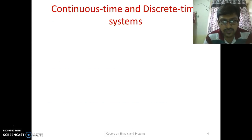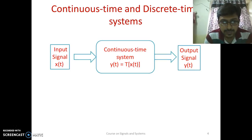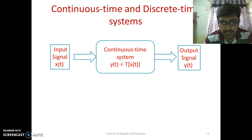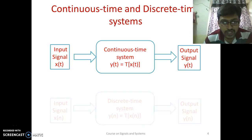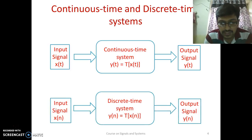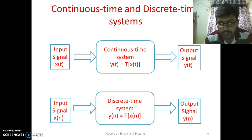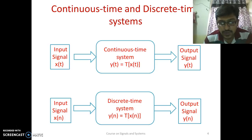We will start with continuous time and discrete time systems. A system is called a continuous time system if it has input as a continuous time signal and it produces output which is also a continuous time signal, and it can be mathematically represented as y(t) = T{x(t)}, where T stands for transformation. Similarly, a discrete time system has input as a discrete time signal and produces output as a discrete time signal, represented as y(n) = T{x(n)}.